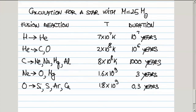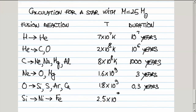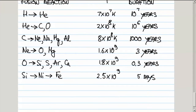Then, synthesis of silicon — first into nickel, which is not stable, and then it decays eventually into iron. The temperature is 2.5 times 10 to the 9th degrees, and this will last only five days. You see here that as the star synthesizes heavier and heavier nuclei, these processes last shorter and shorter periods of time.